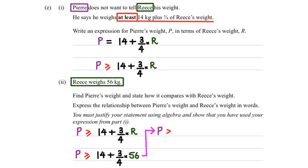So, simplifying this, we would get P greater than or equal to 14 plus 42, which means P is greater than or equal to 56.